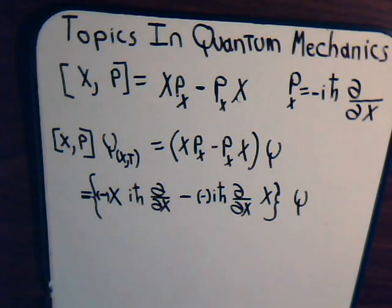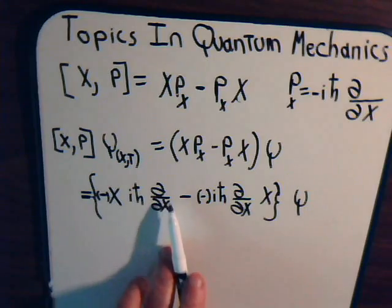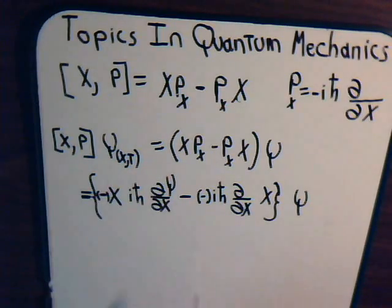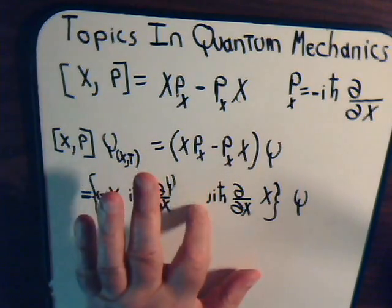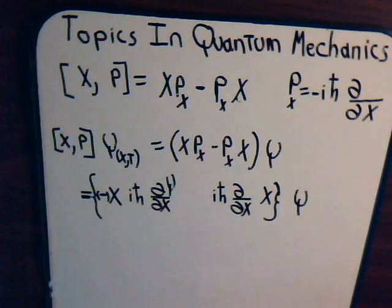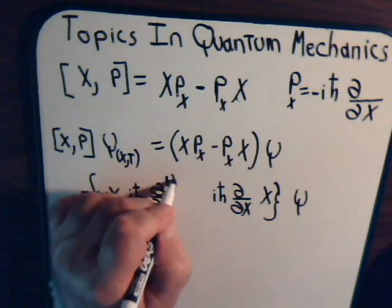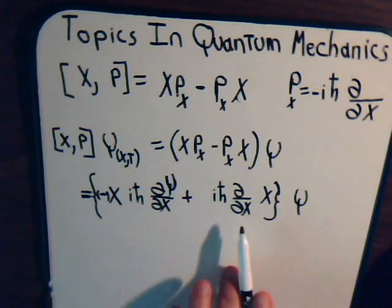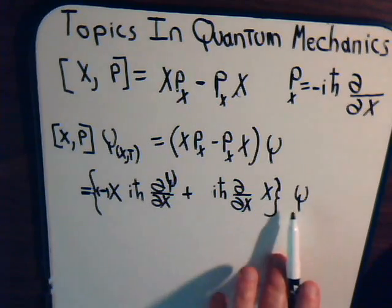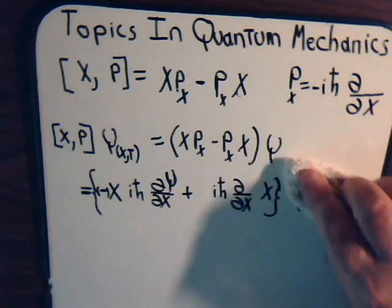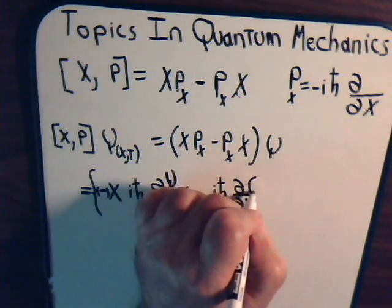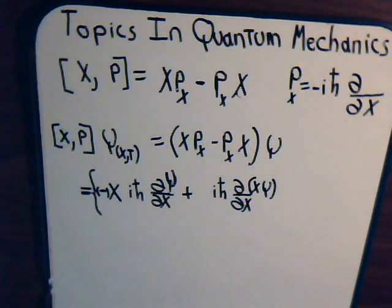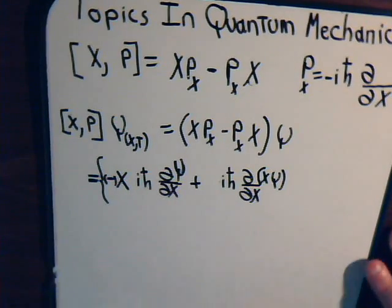So if we bring psi inside, we're going to have the partial of psi with respect to x. This would become a plus sign. And then here we're taking the partial of x times psi.